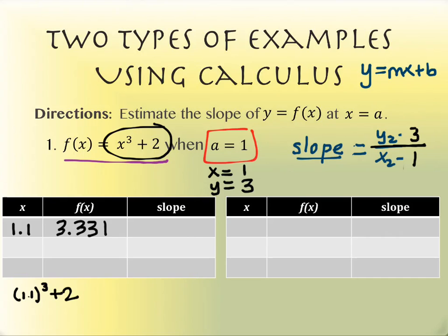After you've changed it so the first line says ask and the second line says auto, hit Second, then Graph. You should have a table that says x and y1 with nothing in it. If you have something in the table already, you can just hit delete to clear those lines. Underneath the x column, put in 1.1. And when you do that, what does it say next to it? 3.331 — just like we put on that board. Isn't that great?